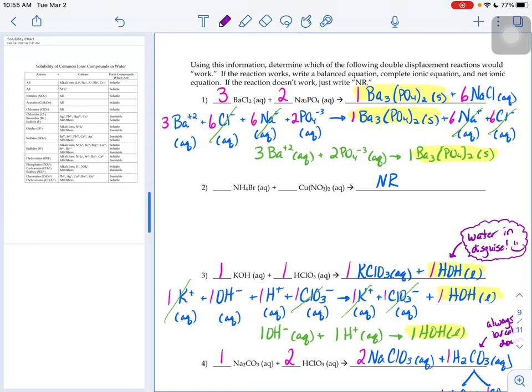What about reaction number two? When we try reaction number two, the ammonium ion would combine with the nitrate ion and the copper with bromide.